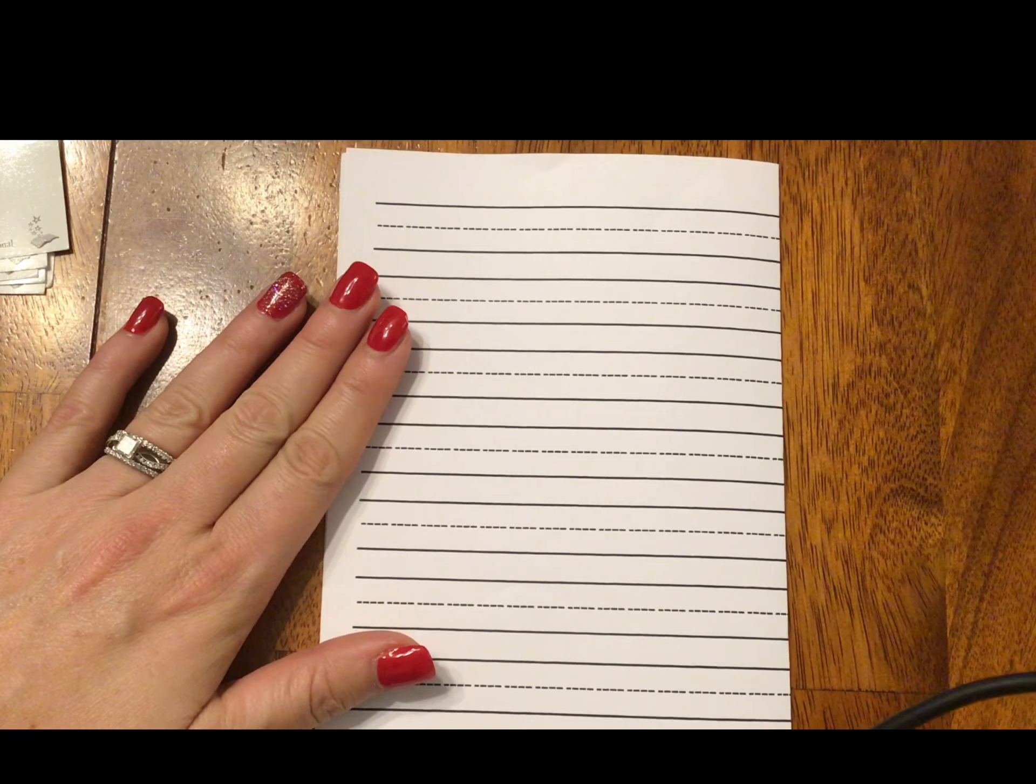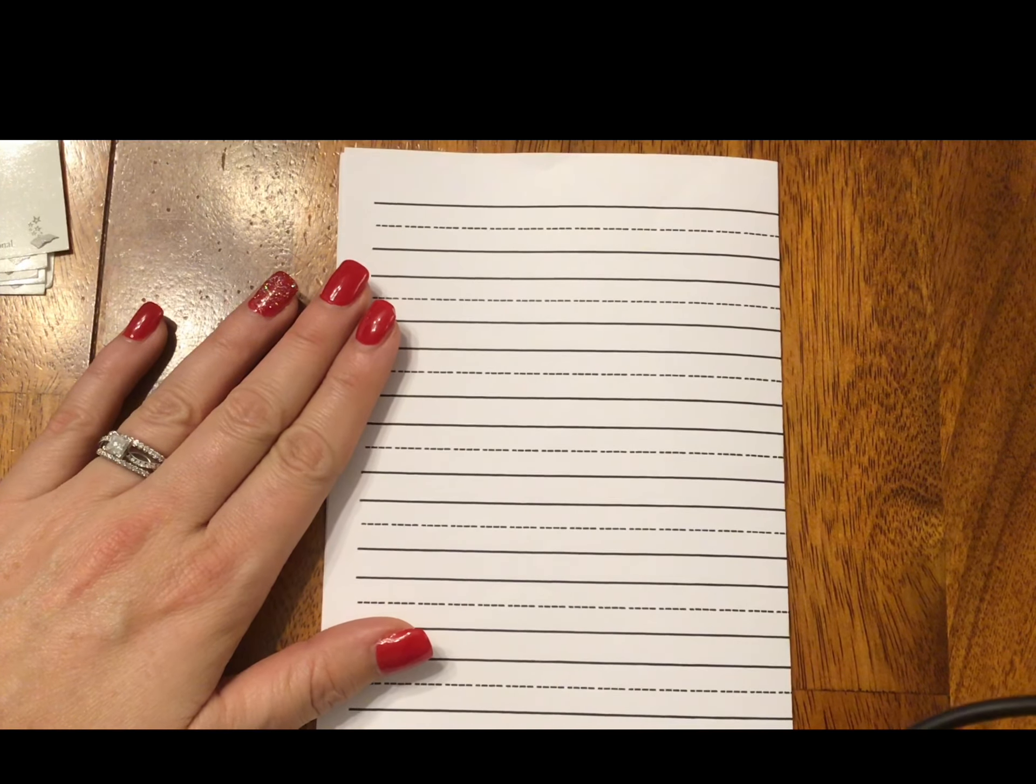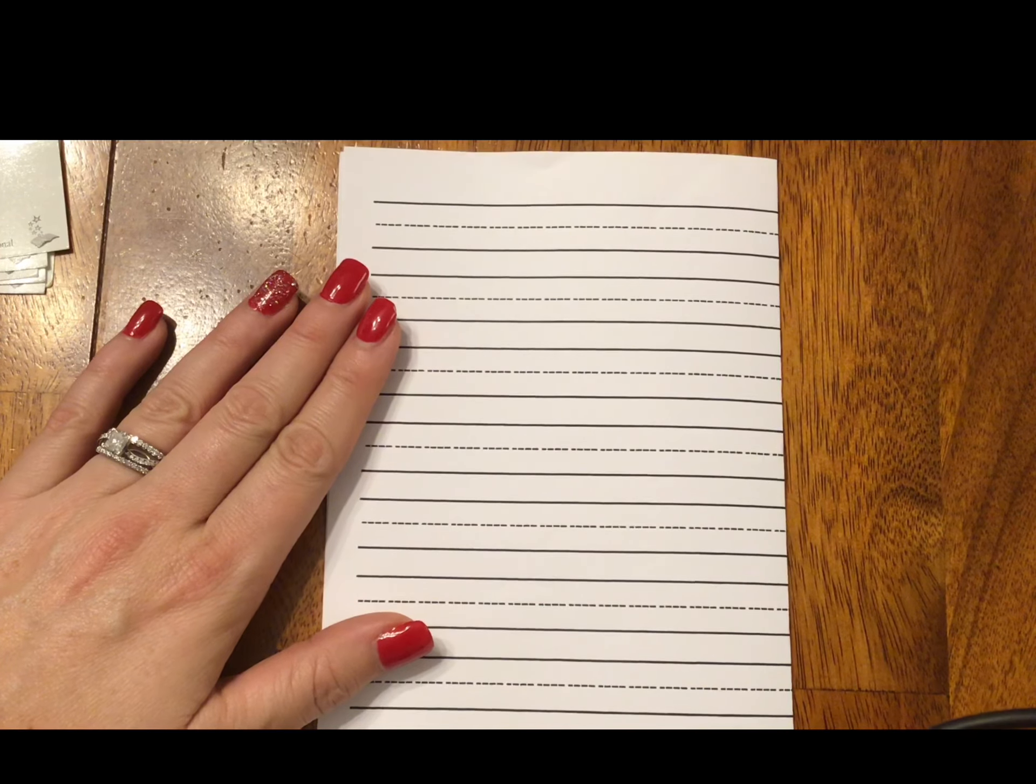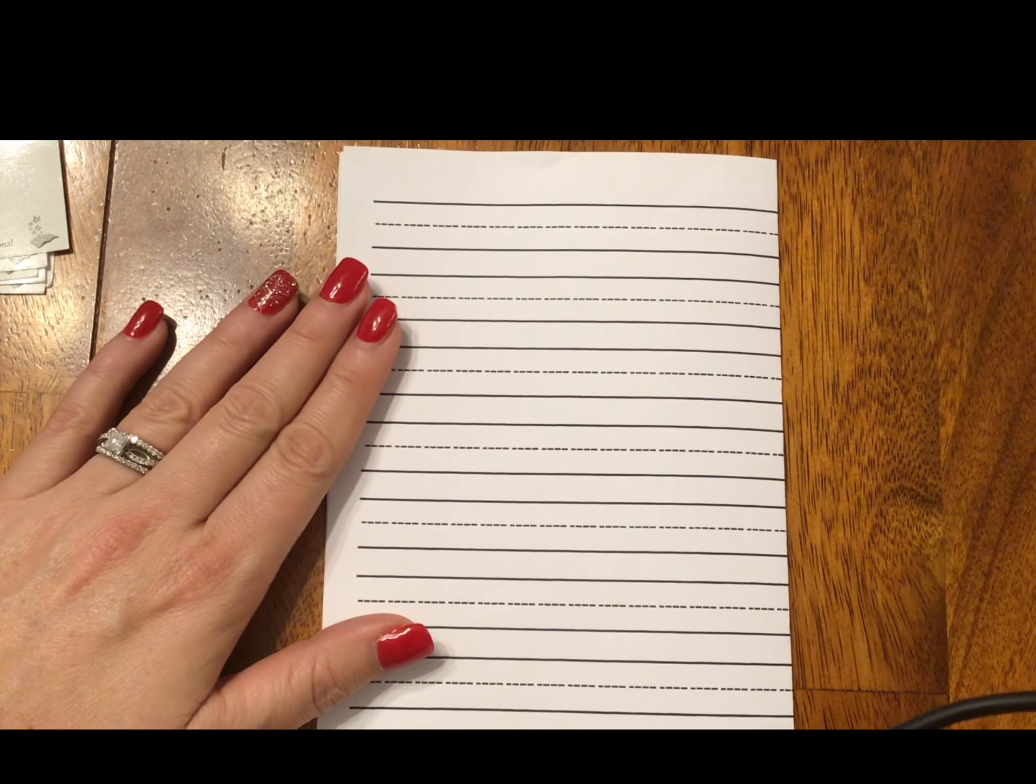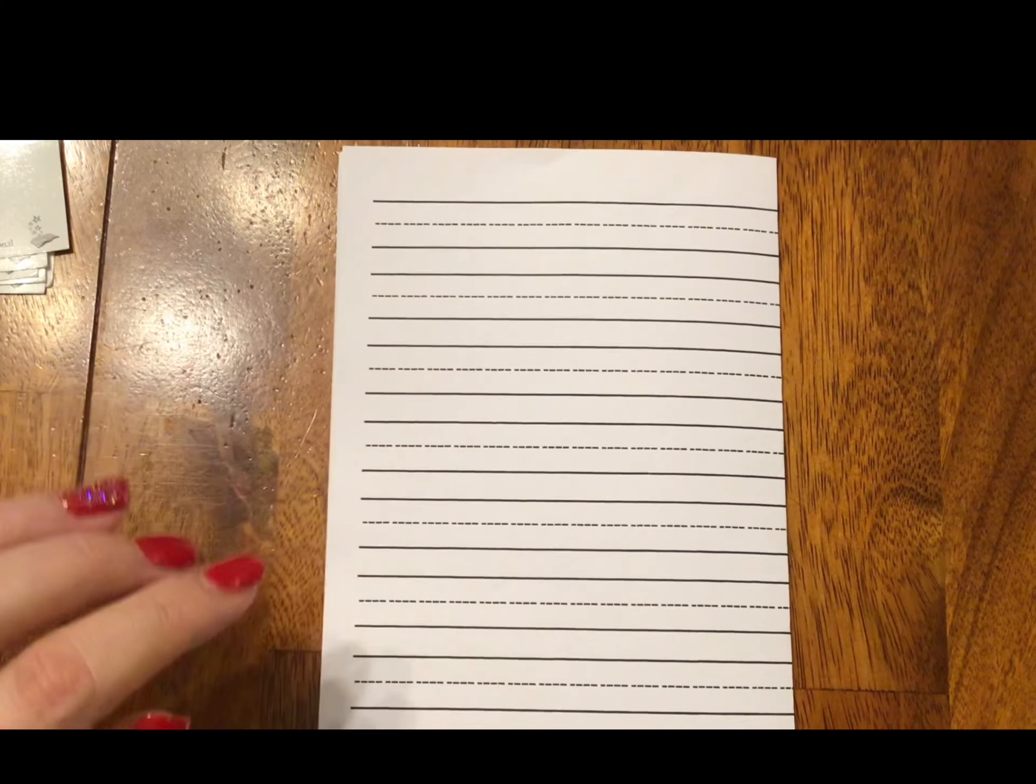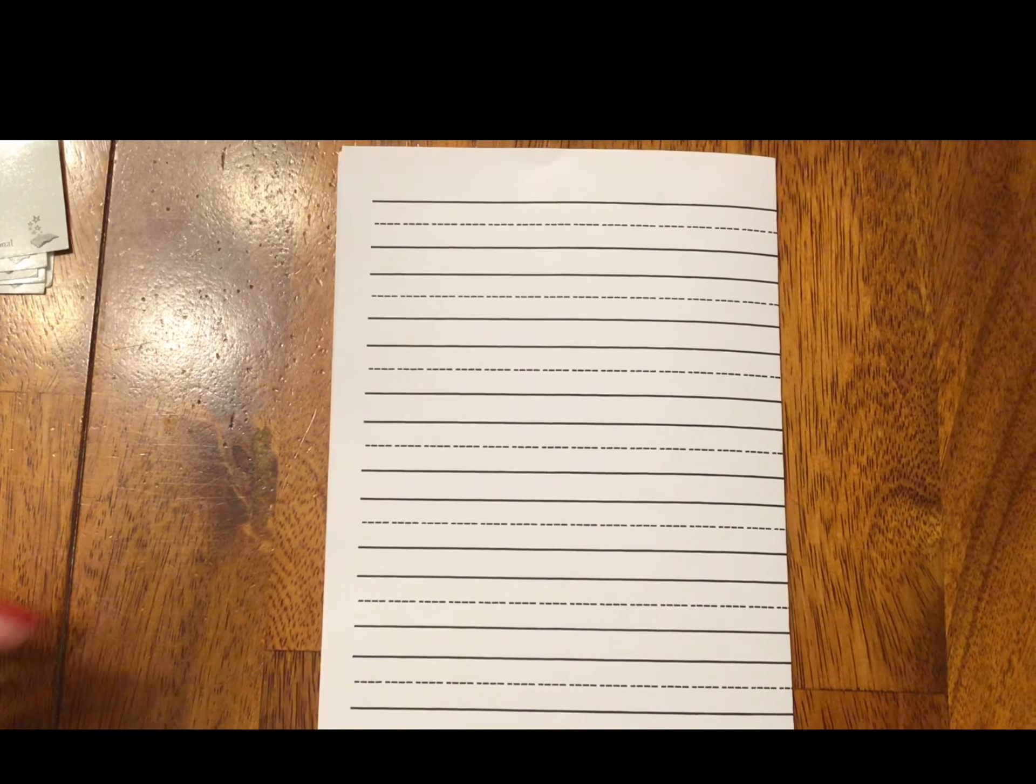We're about to do our best handwriting that we can do. The first sound is O. Say it with me. O. Please write the O that's used in the word toe. Write the O that's used in the word toe.